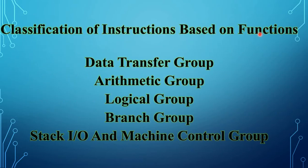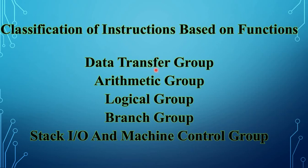The next topic is classification of instructions based on functions. The 8085 instruction set is grouped under five functional categories: data transfer group, arithmetic group, logical group, branch group, and stack I/O and machine control group. The data transfer group moves data between registers, including move, load, store, and exchange instructions. It copies content from a source location to a destination; the source content remains unchanged and condition flags are not affected.